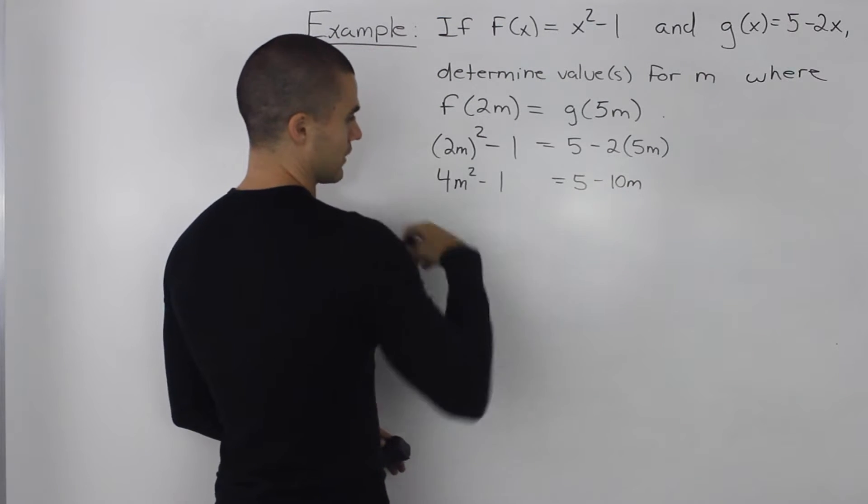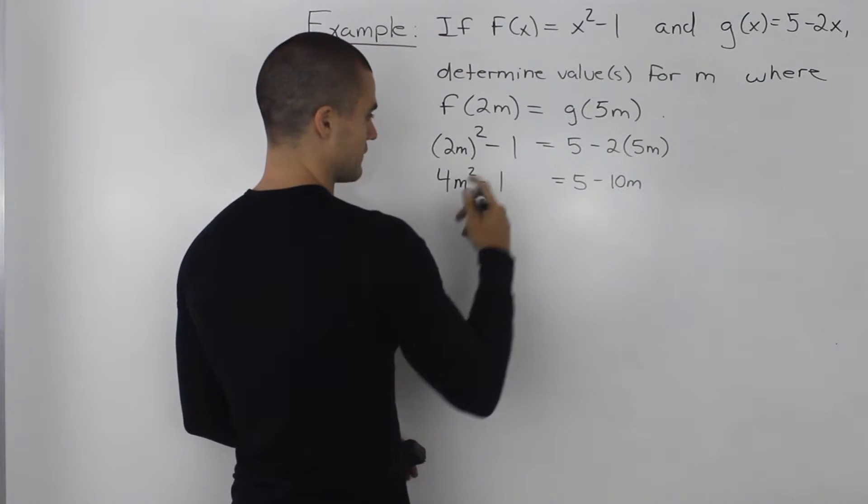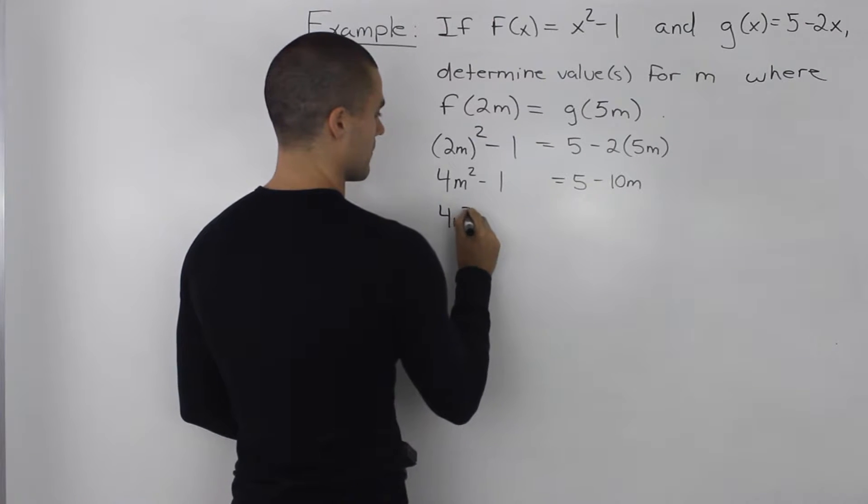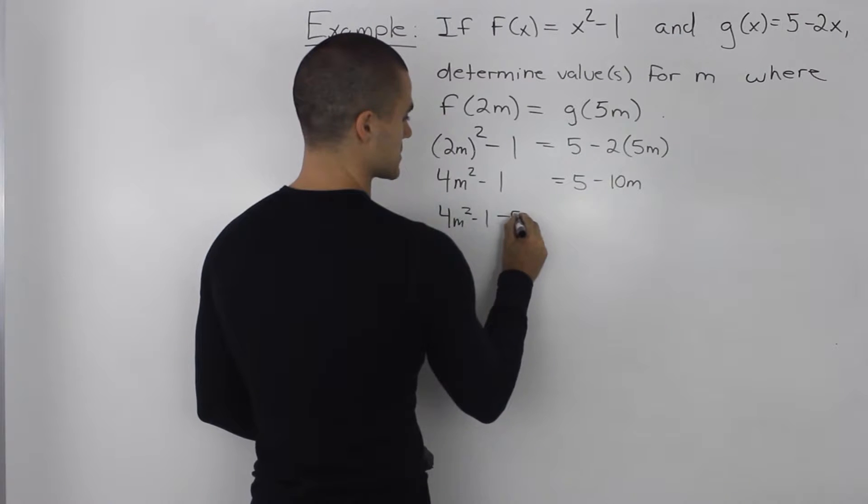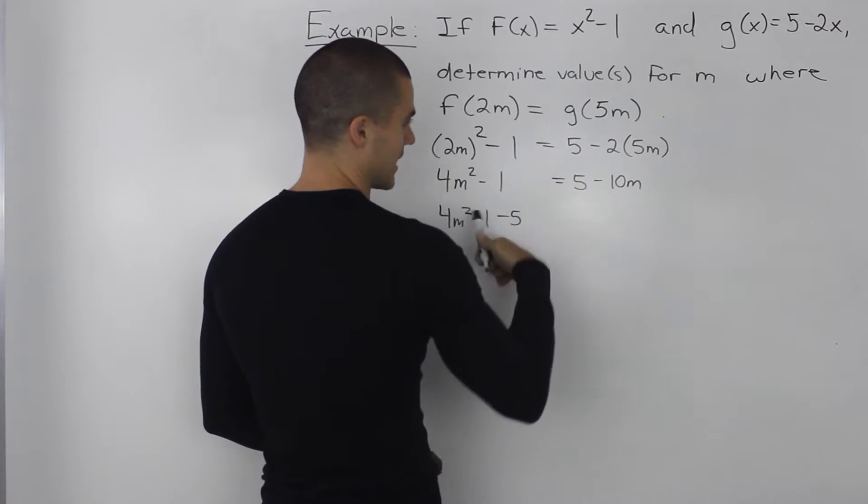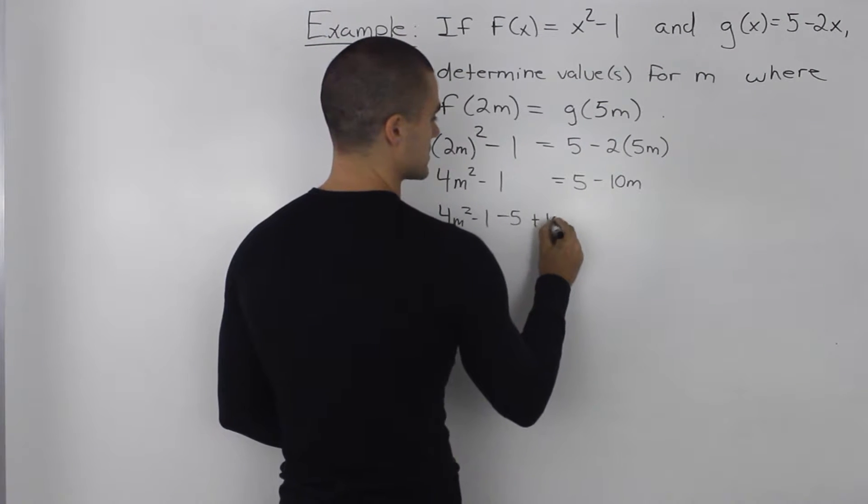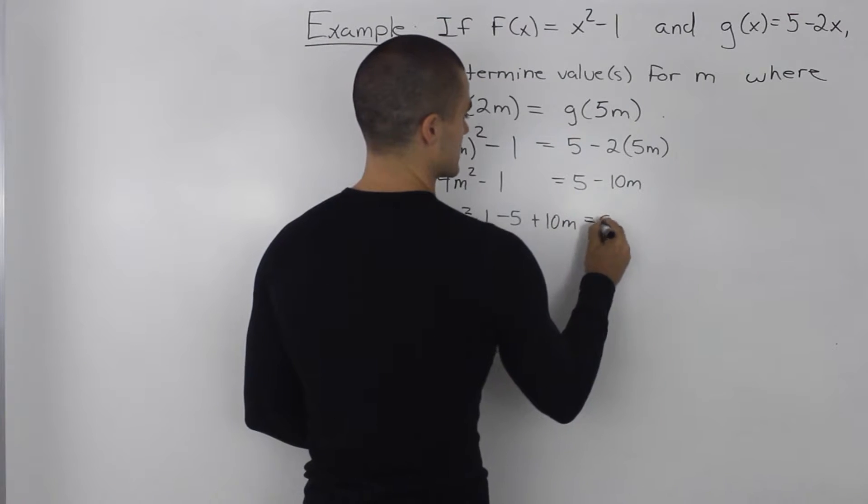Now bringing everything over to the left side, so we'd have 4m squared minus 1, bring the positive 5 over, that becomes negative 5, bring the negative 10m over, and that becomes positive 10m, and that's equal to 0.